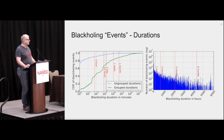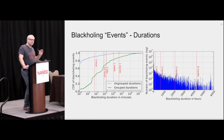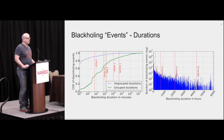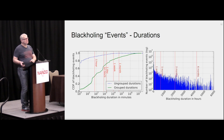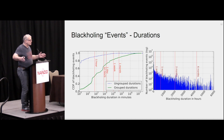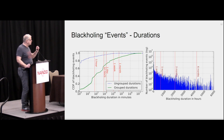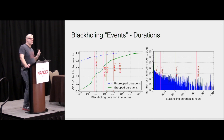Looking at the duration of a blackholing event, the blue dotted line shows what they called ungrouped durations — simply how long a blackhole prefix was announced. They also produced a grouped version, and you see a huge difference between the two.